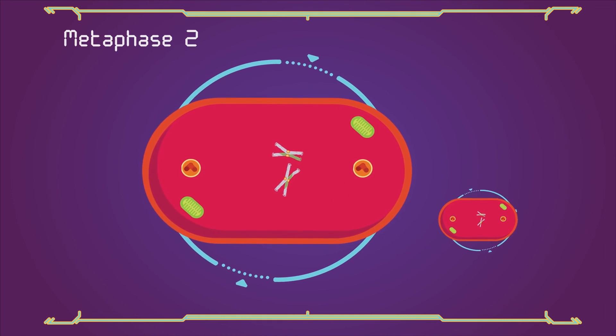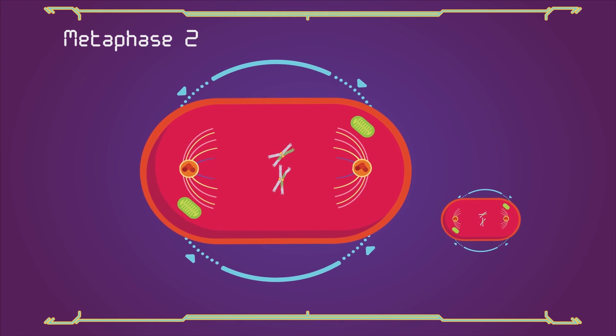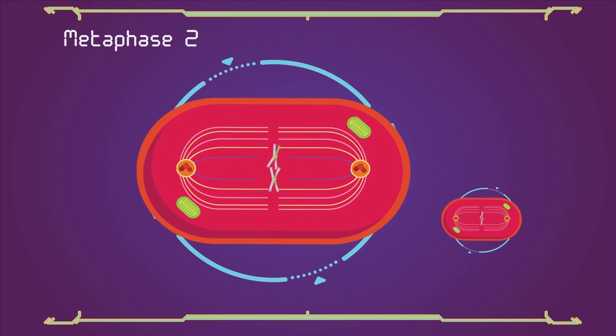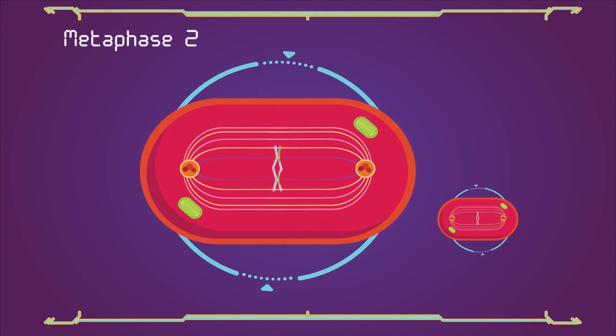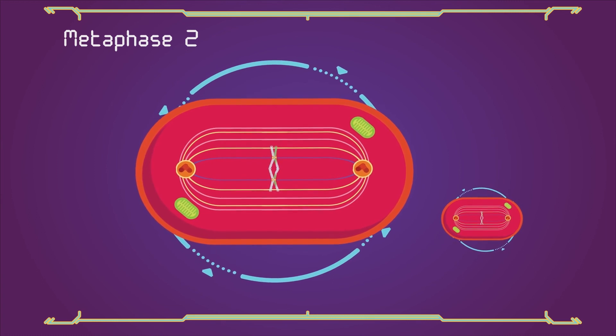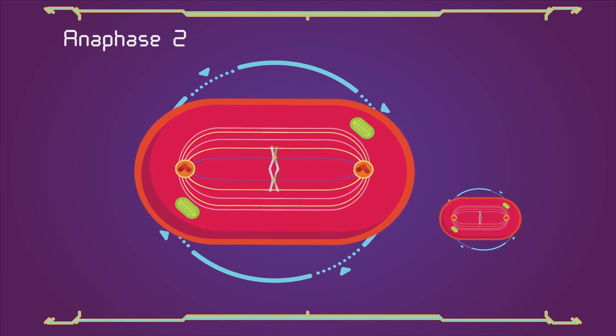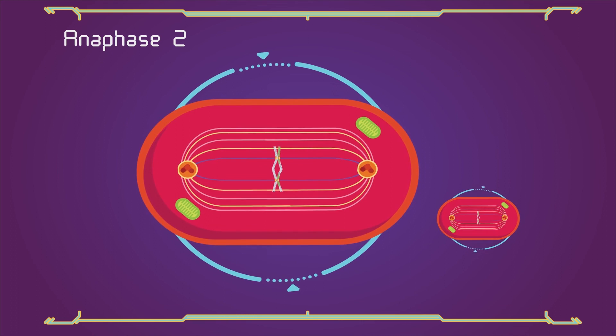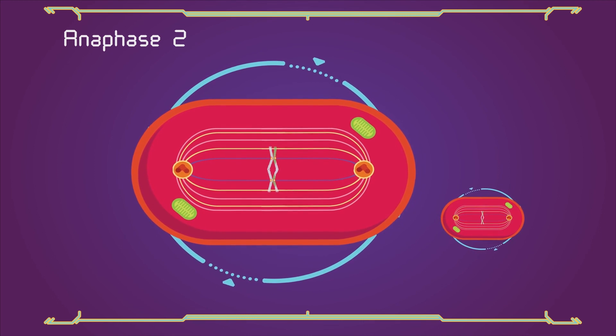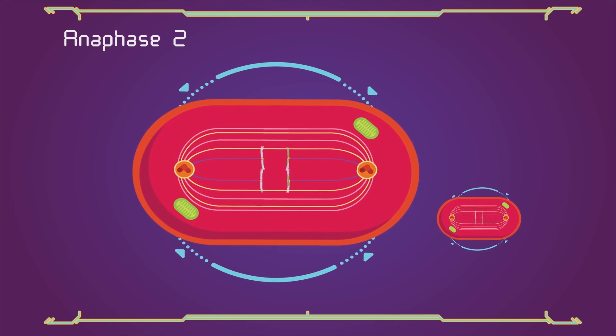In metaphase 2, the centromeres contain two kinetochores that attach to spindle fibers from the centrosomes at opposite poles. This is followed by anaphase 2, in which the remaining centromeric cohesion is cleaved, allowing the sister chromatids to segregate. The sister chromatids, by convention, are now called sister chromosomes as they move toward opposing poles.